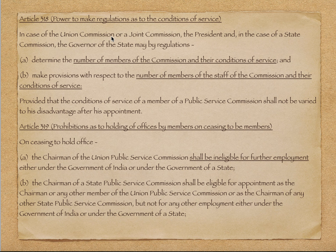Article 318 के तहत: in the case of union commission and a joint commission, the president, and in the case of state commission, the governor of the state may by regulation — (A) determine the number of members of the commission and their condition of service, (B) make provisions with respect to the number of members of the supporting staff of the commission and their condition of service। यानी commission में कितने members होंगे और उनकी condition of service क्या होगी, ये decide करेगा president या governor respectively।